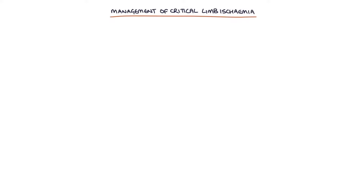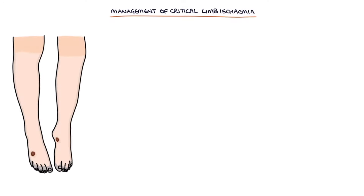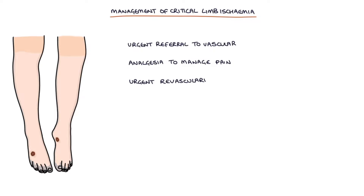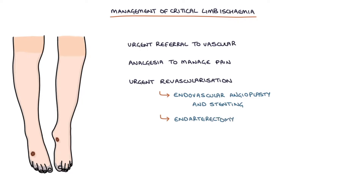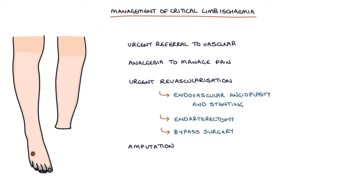Let's talk about the management of critical limb ischemia. Patients with critical limb ischemia require urgent referral to the vascular team. They require analgesia to help manage the pain. Urgent revascularization can be achieved by endovascular angioplasty and stenting, endarterectomy, or bypass surgery. Amputation can be used to remove the limb if it's not possible to restore the blood supply.